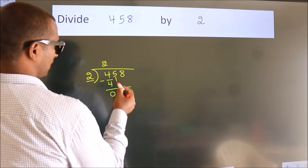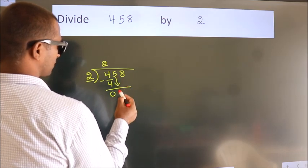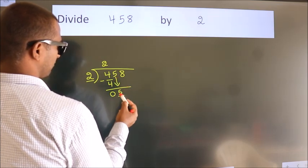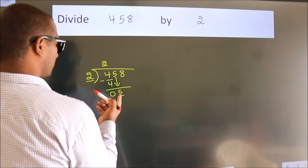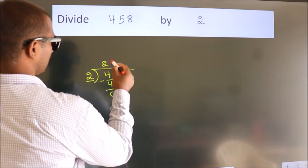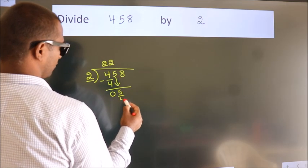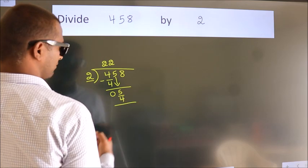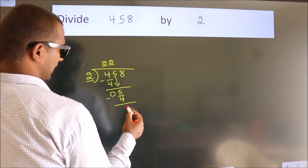After this, bring down the beside number. So 5 down. So 5. A number close to 5 in 2 table is 2 2s, 4. Now we subtract. We get 1.